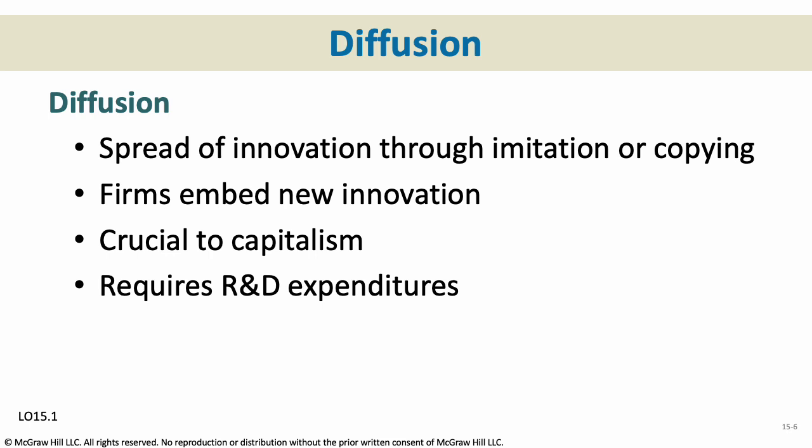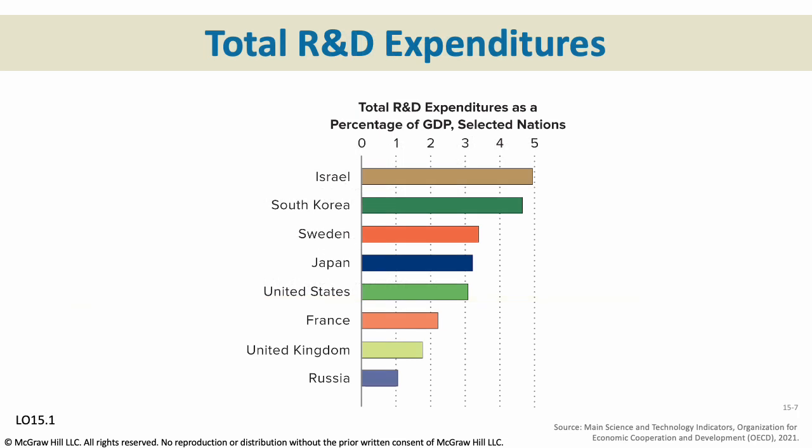For diffusion to work, companies have to spend heavily on research and development. In 2015, almost half a trillion dollars — $469 billion — was spent by businesses and government in the United States just on research and development. A tremendous amount of money and time is poured into R&D all the time. Looking at R&D expenditures as a percentage of GDP: the United States spends a little over 3%, Israel almost 5%, and South Korea close to that as well.